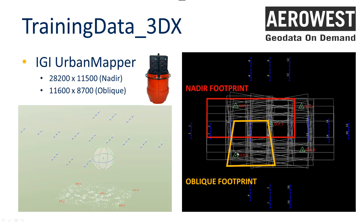The data also includes oblique imagery, which we will not use today — only the Nadir images will be processed. They have 80% overlap in flight direction and 70% cross-strip overlap.